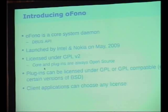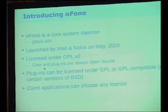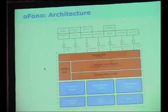So this is what we did — we started Ofono, which is essentially a core system daemon with a D-Bus API. It was actually launched jointly between Intel and Nokia in May of 2009. It is GPL version 2, so pretty much everything inside the daemon has to be completely open source. Plugins can be GPL or any license compatible with GPL, and the client applications can be of any license — the UI can actually be completely closed, but everything in the core daemon has to be completely open.